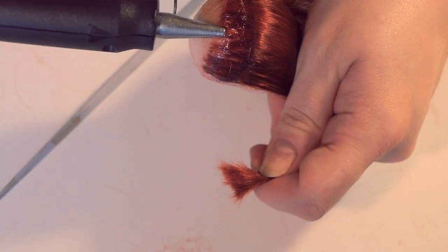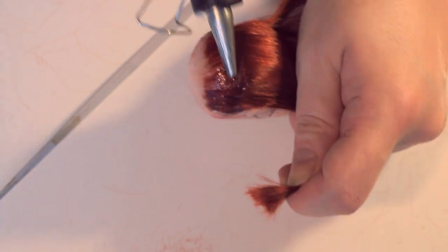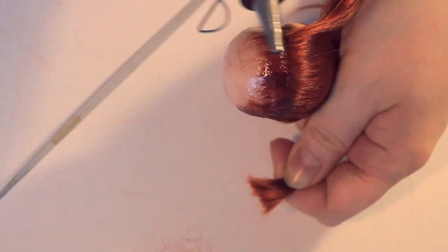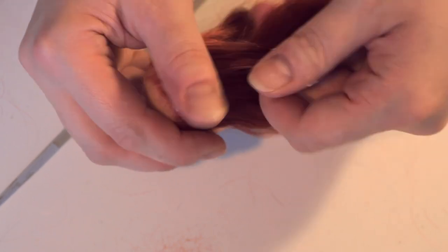If you want to make a wig that is meant to be washed and brushed, braided etc, you do want to make the glue seams this wide to make it extra sturdy so none of the hairs get pulled out.